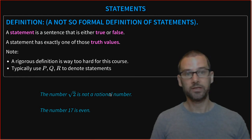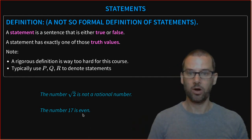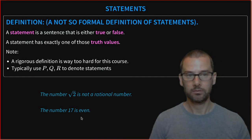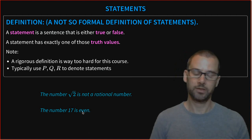On the other hand, the number 17 is even. This is a statement, but it's a false statement. We know this is not true because we can't write it as two times something else. This is an example of a true statement, and this is an example of a false statement.